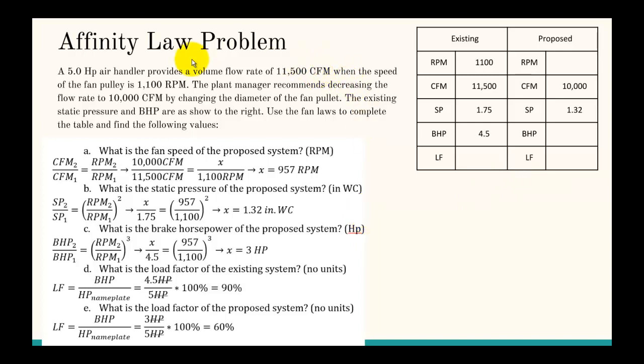You wouldn't get this full problem on the CEM exam, but you could get pieces of it. A 5 horsepower air handler provides a volume flow rate of 11,500 CFM when the speed of the fan pulley is 1,100 RPM. The plant manager recommends decreasing the flow rate to 10,000 CFM by changing the diameter of the fan pulley. The existing static pressure and BHP are as shown. Use the fan laws to complete the table and find the following values. I'm not going to complete the table, but I'm just going to find the values here.